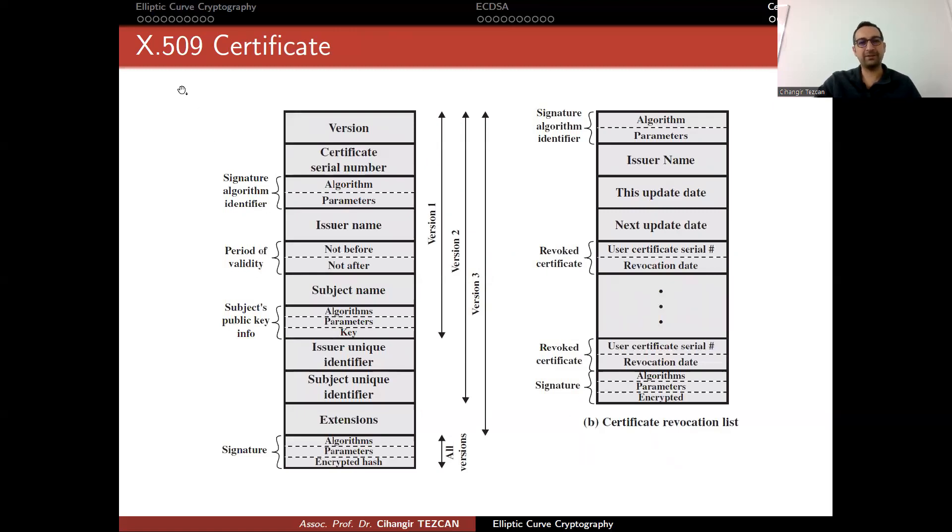There are many types of certificates. X.509 is one of the most known and used standards. Initially in version one, you had things like version, certificate serial number, algorithm and parameters for signature algorithm identifier, issuer name, period of validity. A certificate will not be valid after this date. Subject name and subject's public key info, algorithms, parameters and key. If you're using elliptic curve digital signatures, then you have the domain parameters here. The hash functions you are using are defined in this algorithm spot. In the extended version, there are some more fields, but all versions contain the signature encrypted hash parameters and algorithms.